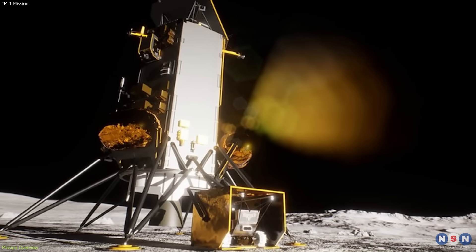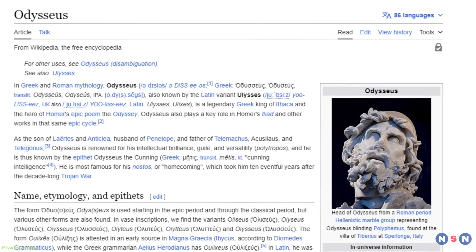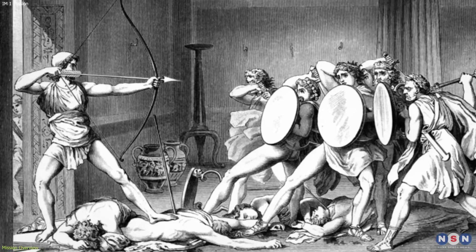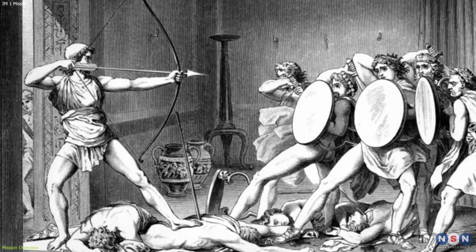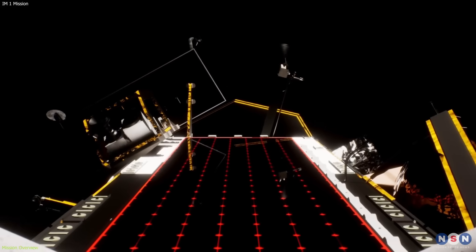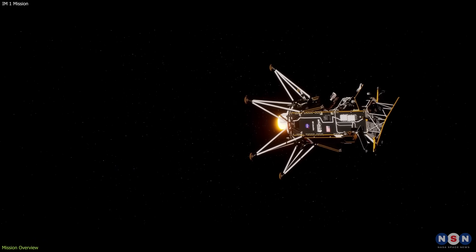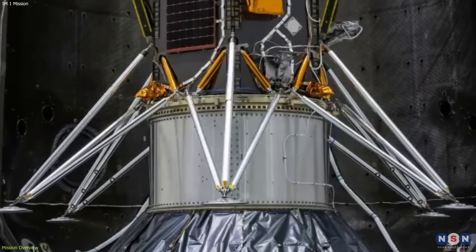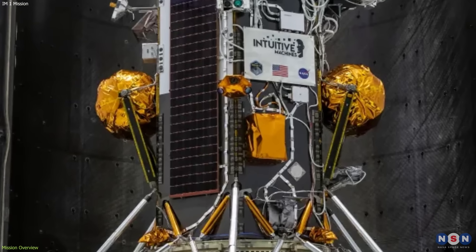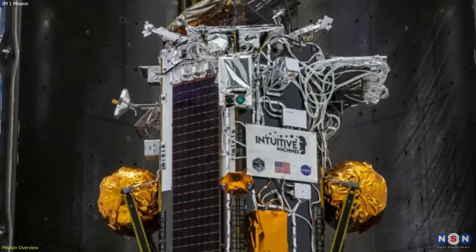The lander, Odysseus, is named after the legendary Greek hero who endured many hardships and adventures on his way back home from the Trojan War. It is about the size of a small car and weighs about 1,800 kilograms. It has four legs, two solar panels, a high-gain antenna, and a payload bay.